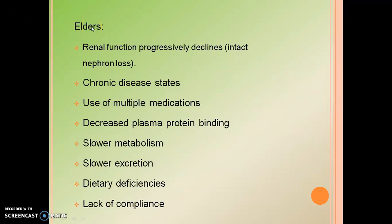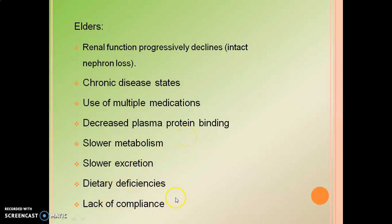For elderly patients, there are several factors to consider: chronic disease states, use of multiple medications, decreased plasma protein binding, slow metabolism, slow excretion, dietary deficiencies, and lack of compliance. These are the factors which modify or affect drug action in elderly patients.